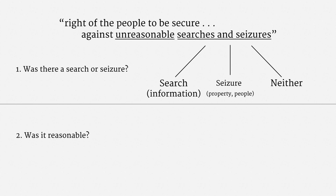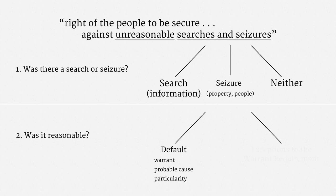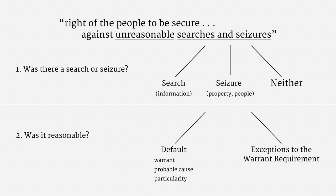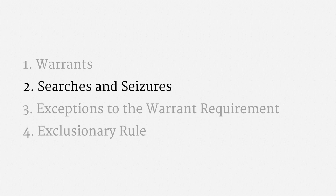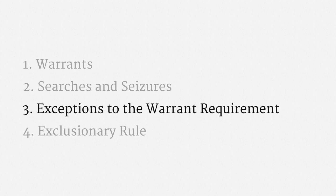So let's turn to those substantive reasonableness requirements. The default rule is everything we've just seen: a warrant supported by probable cause with particularity. That's the default. There are, however, a number of areas where the courts have made exceptions to the default. This is the modern trend — instead of saying something isn't a search or seizure, the courts will make a special, intermediate rule that's less of an imposition than a warrant. Now let's turn to those exceptions to the warrant requirement.